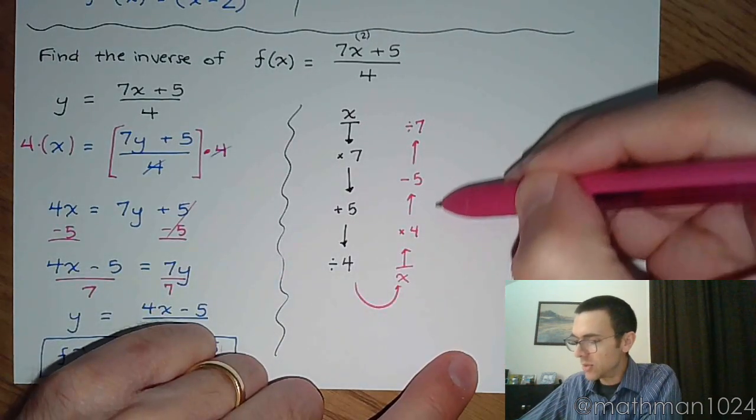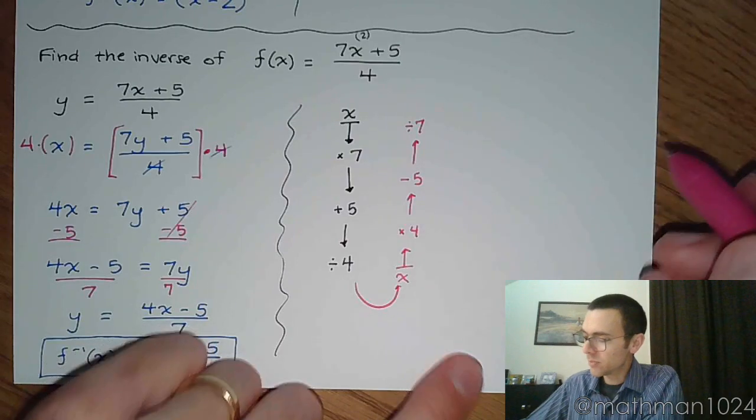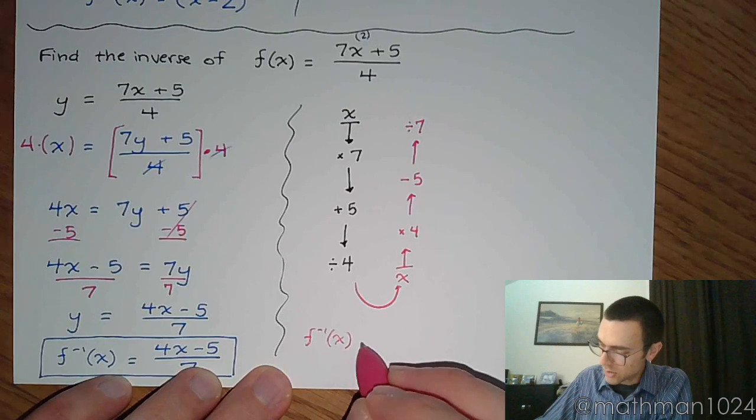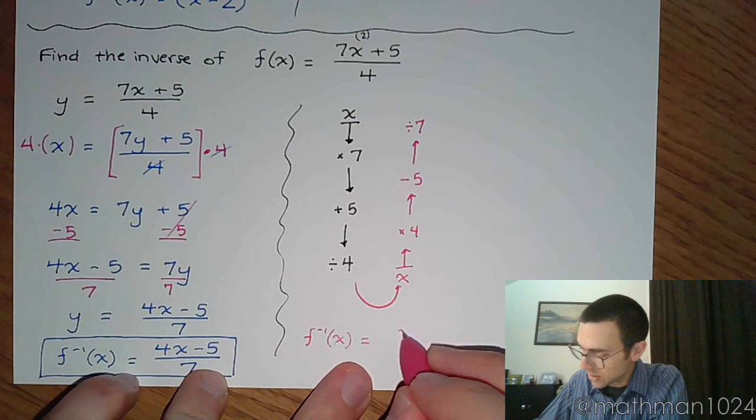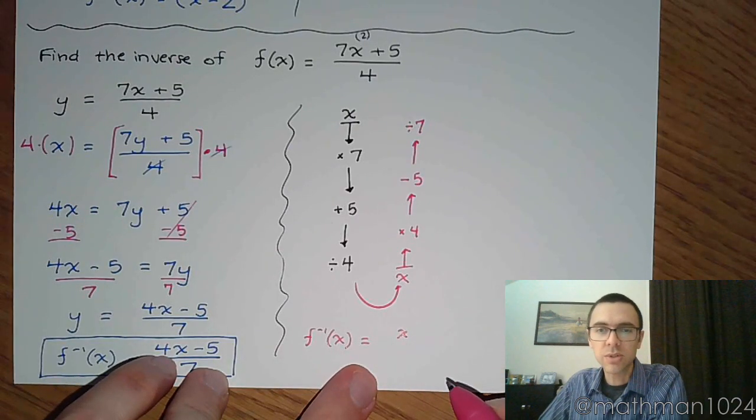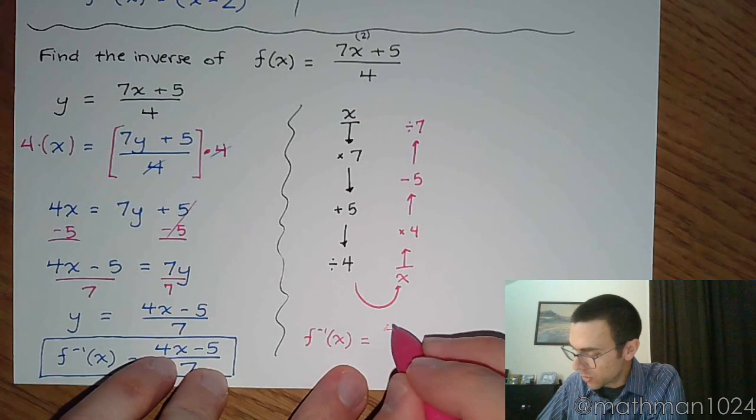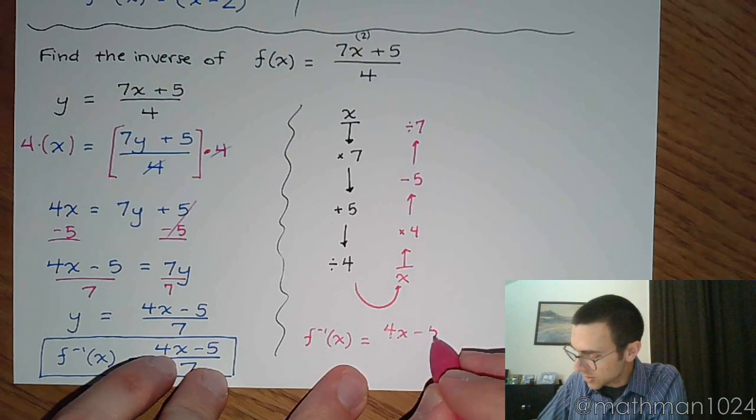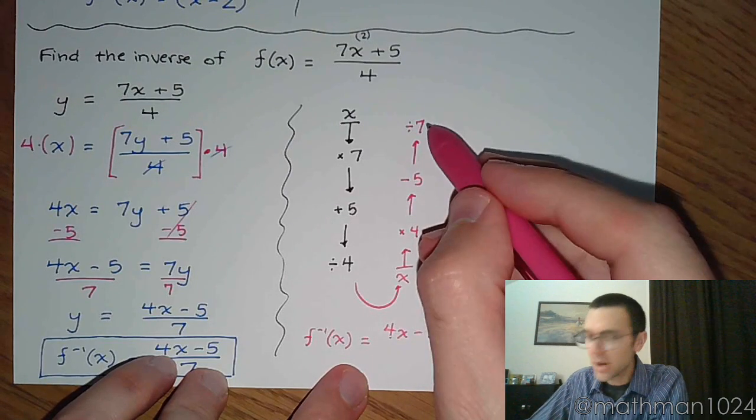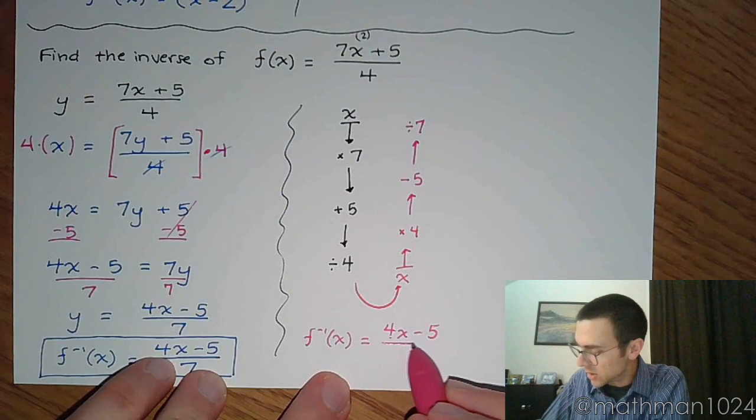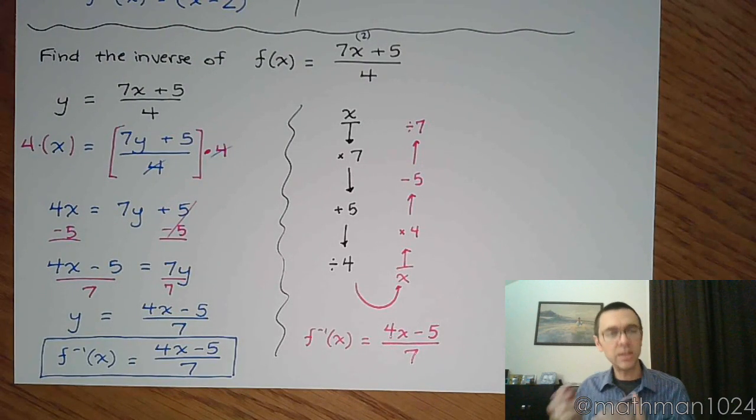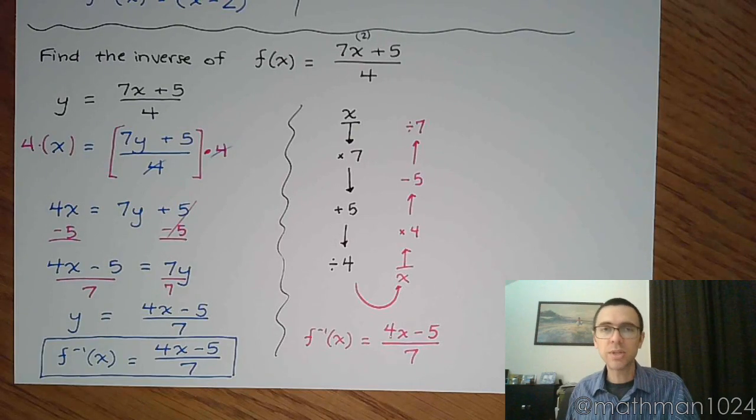So if I follow this, my inverse function would be this. I'm starting with x. And what do I do first? I multiply that times 4, so that's going to be 4x. And then I'm going to subtract 5 from that expression, so 4x minus 5. And then I have to divide the whole thing by 7. Divide that whole expression by 7. And there's your inverse. Right? You've got the easy way, and then you've got the easy way. You just have to choose.